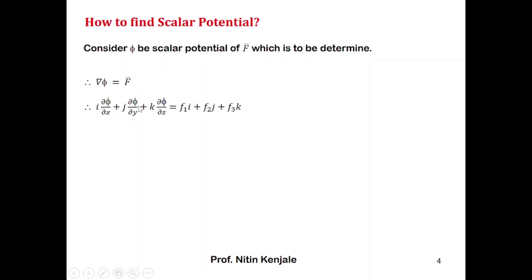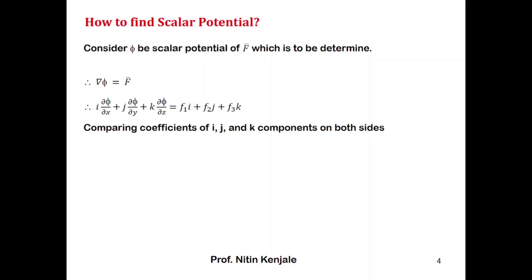By using the definition of gradient of phi, we can say i times ∂phi/∂x plus j times ∂phi/∂y plus k times ∂phi/∂z equals f bar, which is f1·i plus f2·j plus f3·k. Comparing coefficients of unit vectors i, j, and k, we get: ∂phi/∂x = f1, ∂phi/∂y = f2, and ∂phi/∂z = f3.